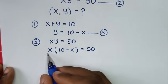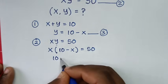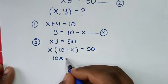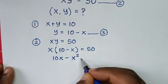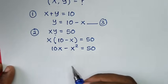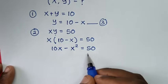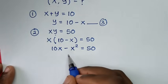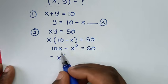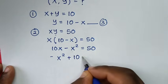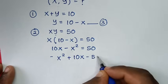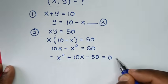Then expanding: x times 10 is 10x, and x times negative x is negative x squared, is equal to 50. Then we take 50 to the left side, so we have negative x squared plus 10x minus 50 is equal to 0.